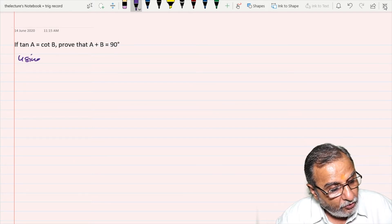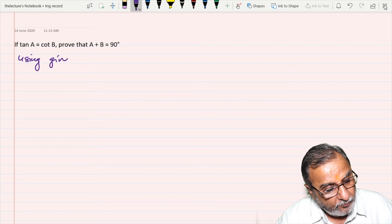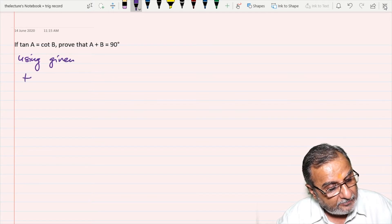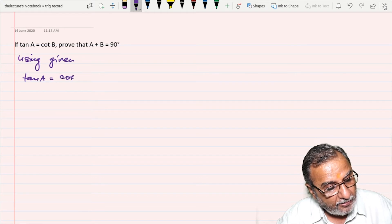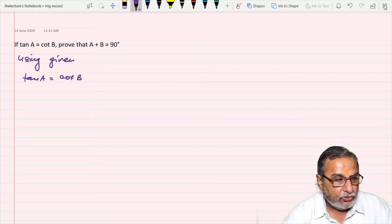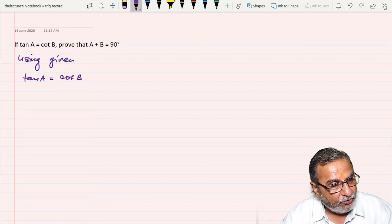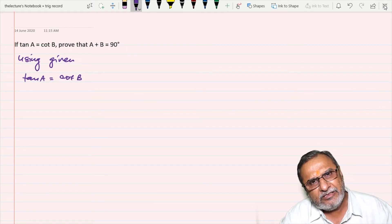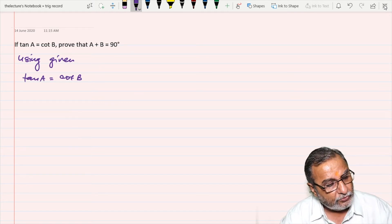So using given that is tan A equals cot B. Both angles are acute angles, hence we will change any one out of two.